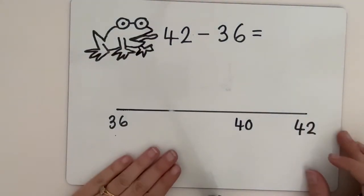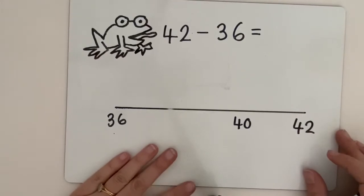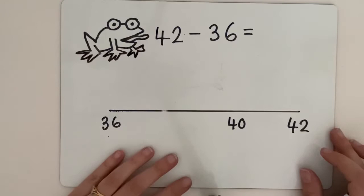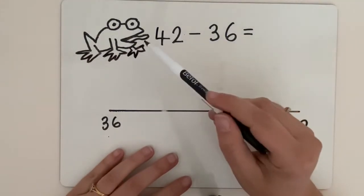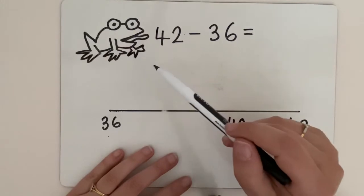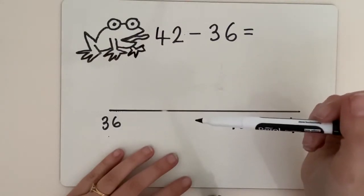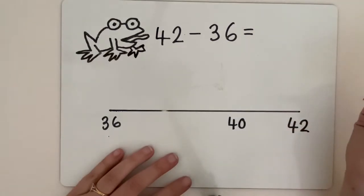Today we're going to be subtracting by counting up. It's a way to find the difference. Finding the difference is another way of saying subtraction. Can you see we've got a little frog on here today? Frogs like jumping and we've used the frog before in class, so I thought it would be a good way to remind you today.